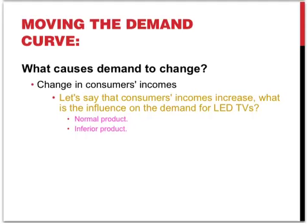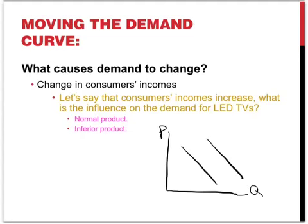Another determinant of demand is consumers' incomes. So what happens to demand when consumers' incomes increase? In our example, we can ask what happens to the demand for LED TVs if people have more income. Now if this is a normal product, an increase in income will lead to an increase in demand. People have more money and the result is that they throw away their old TVs and there's an increase in the demand for LED TVs.